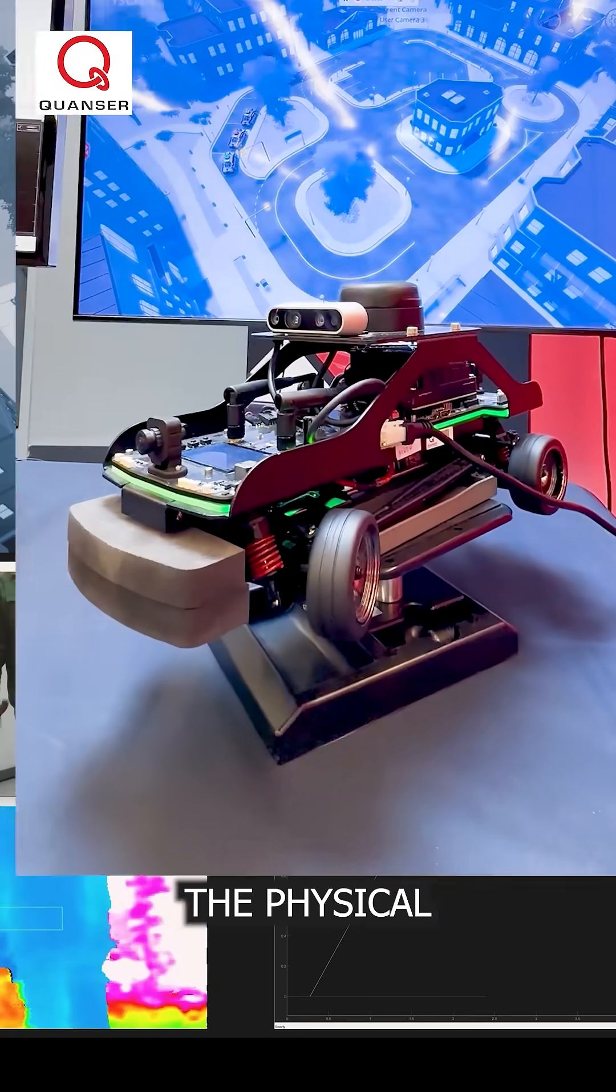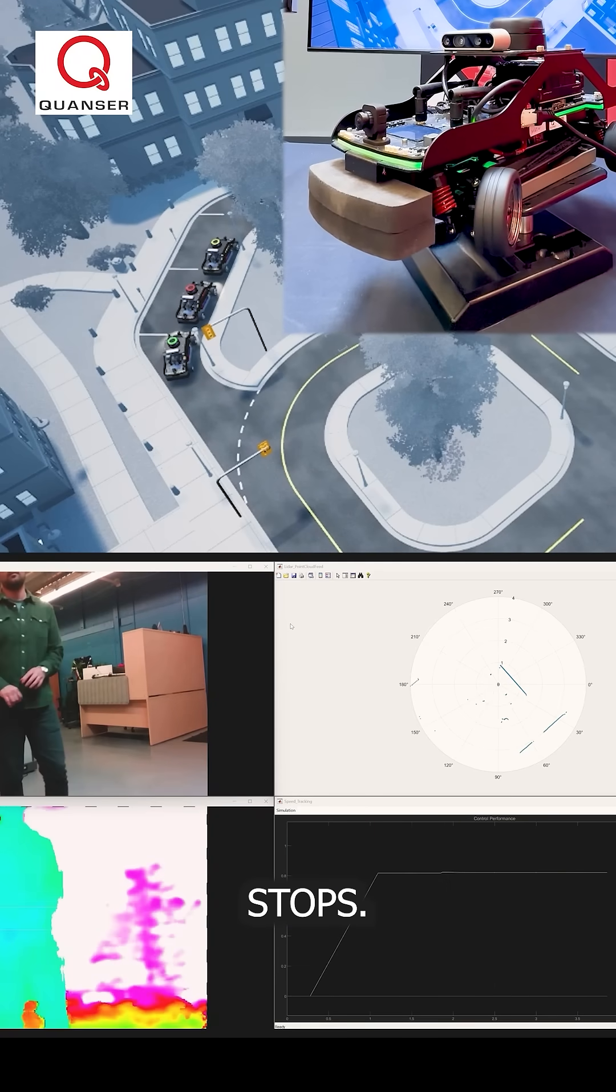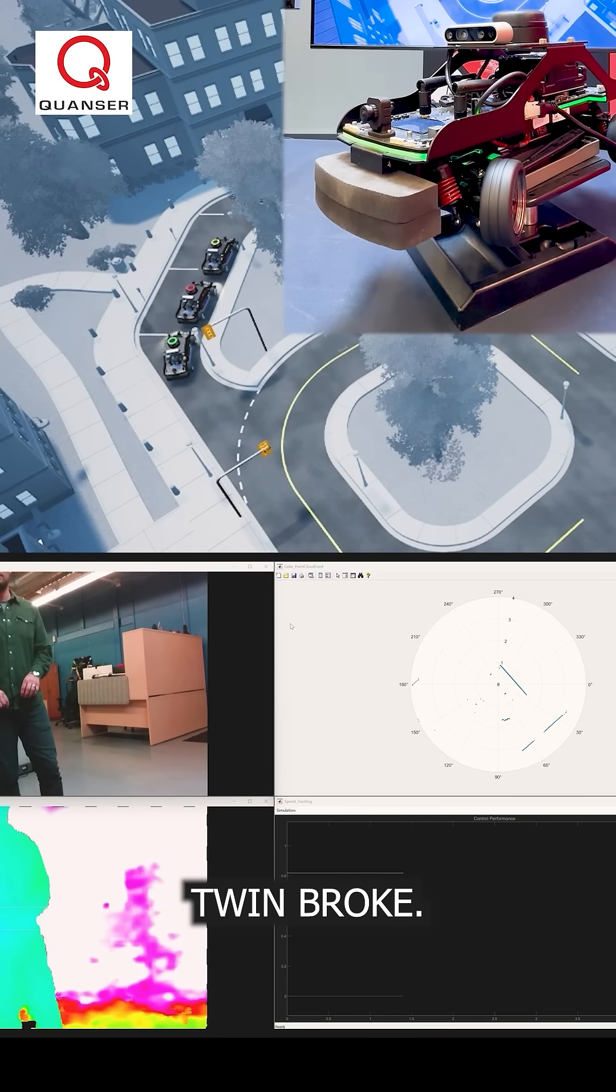Uh-oh. The physical car takes off, but the twin stops. Seems the digital twin broke, or did it?